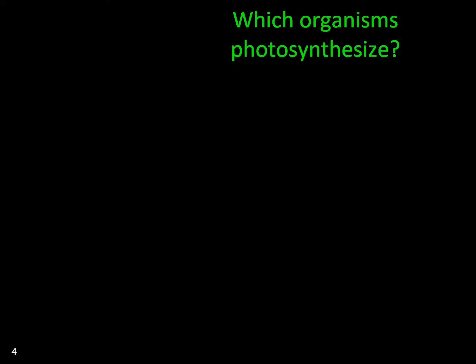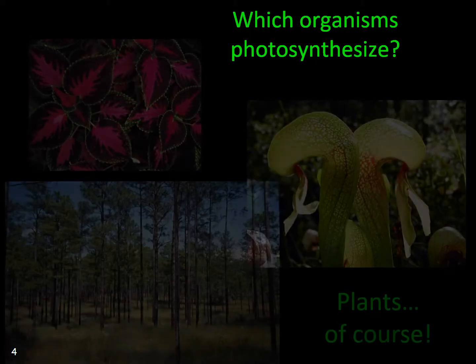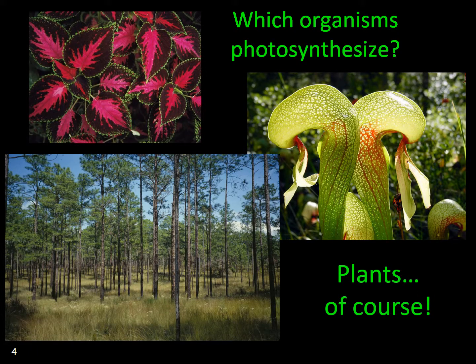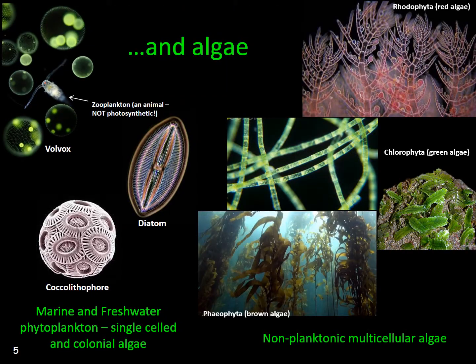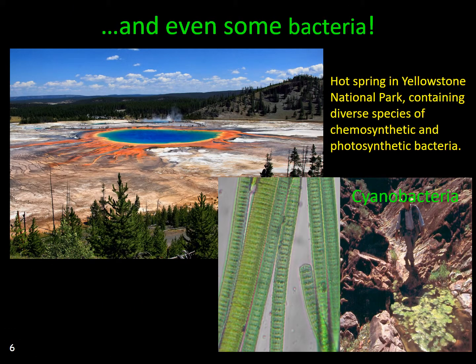So what types of organisms utilize photosynthesis as a means of harvesting energy from their environment? A variety of marine and freshwater single-celled, colonial, and multicellular algae also photosynthesize. Some photosynthetic bacteria often reside in environments that are too harsh for plants, such as the excessively hot, salty, or acidic environments found in geothermal springs like those in Yellowstone National Park.